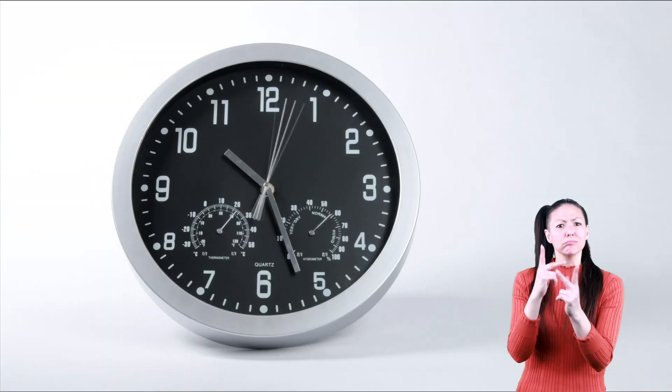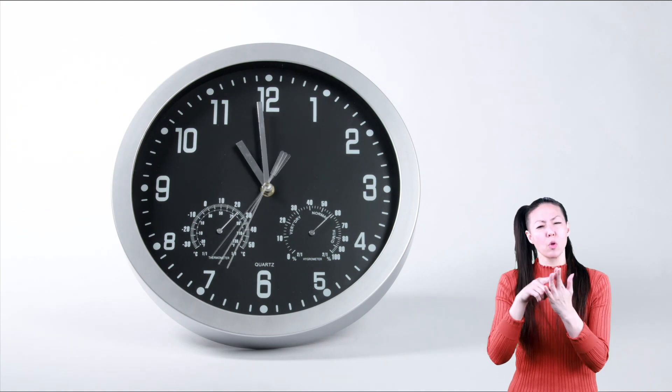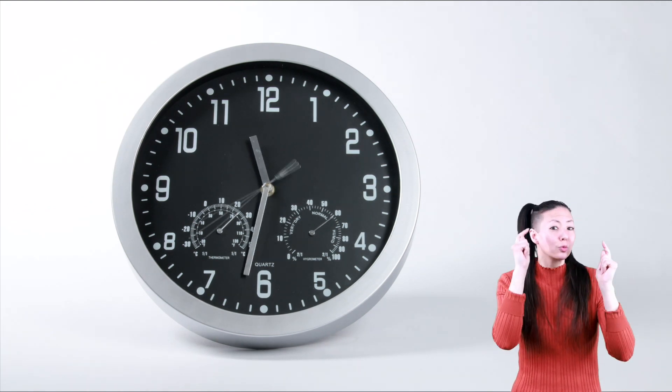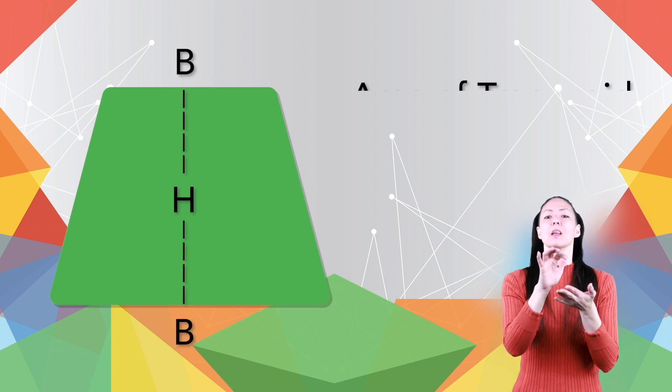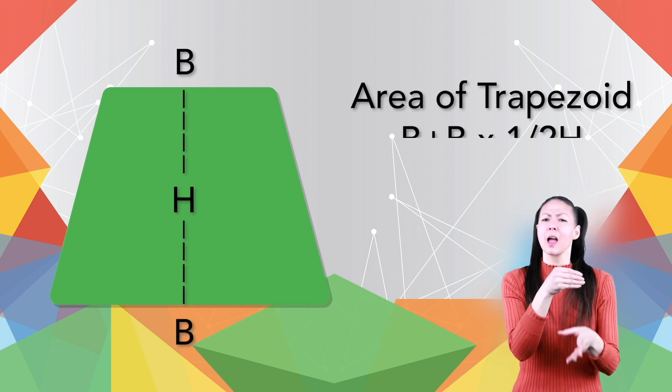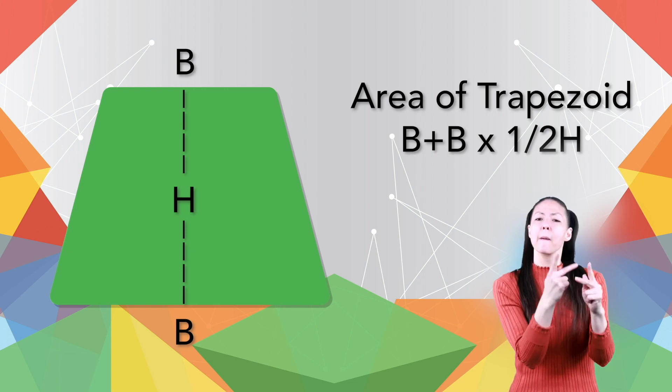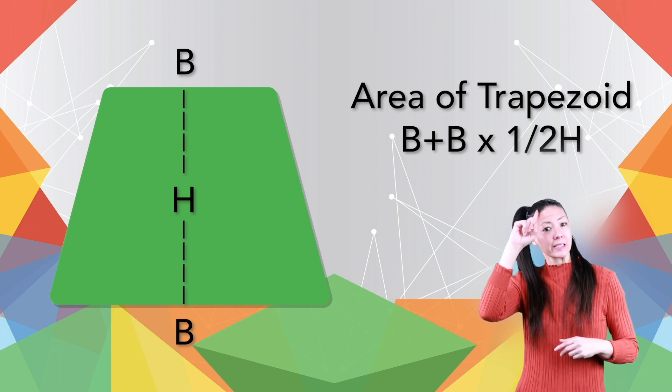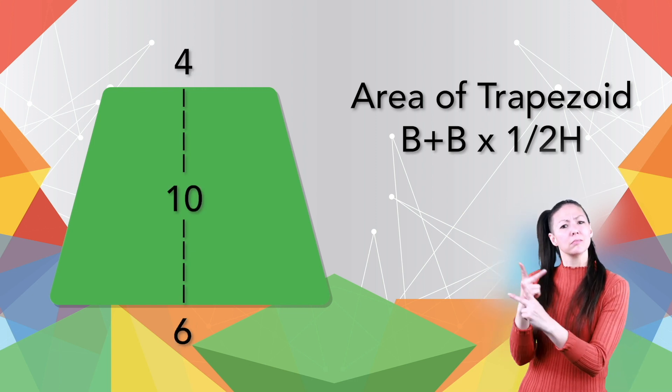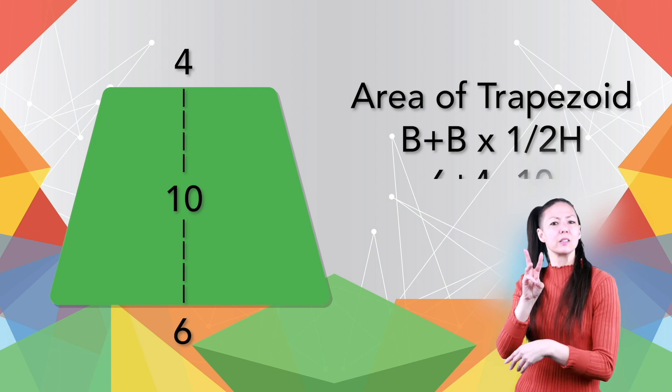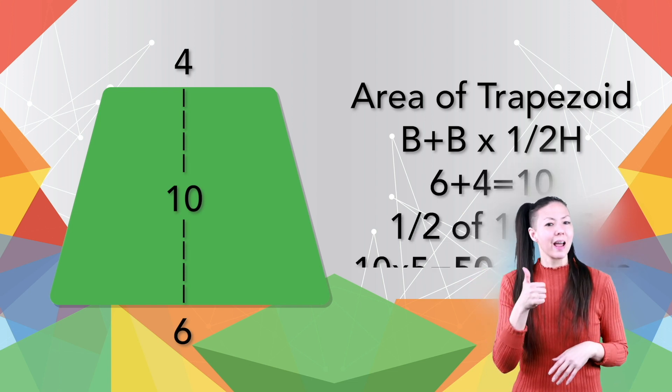While it will take a while to learn all the formulas, here's a quick tutorial. A trapezoid has two bases, as seen here. To calculate its area, you need to add the two bases together and multiply that by half its height. This trapezoid's area is calculated by adding six to four, which is 10, and then multiplying that by five. The area is 50 square units.